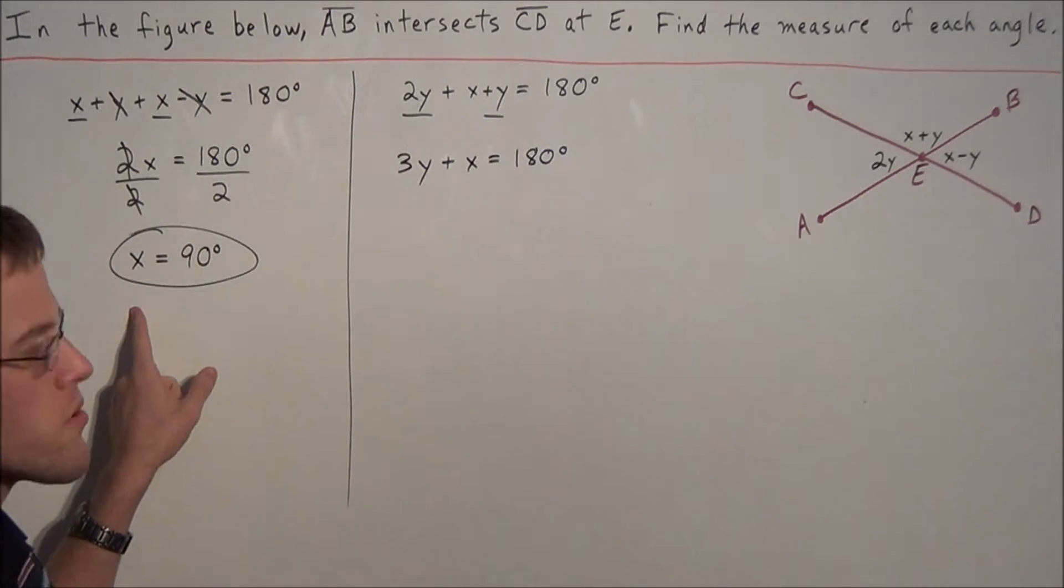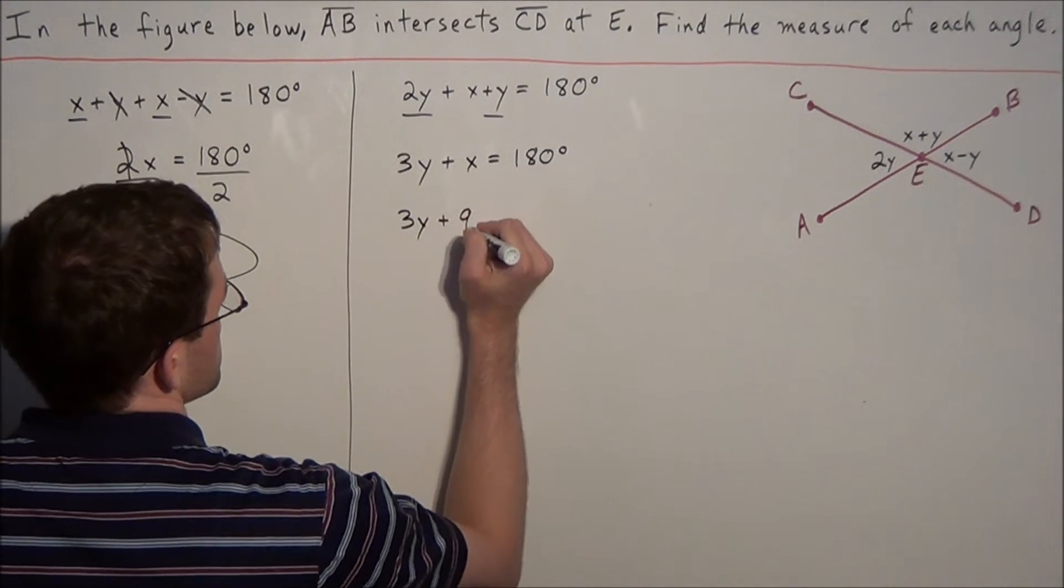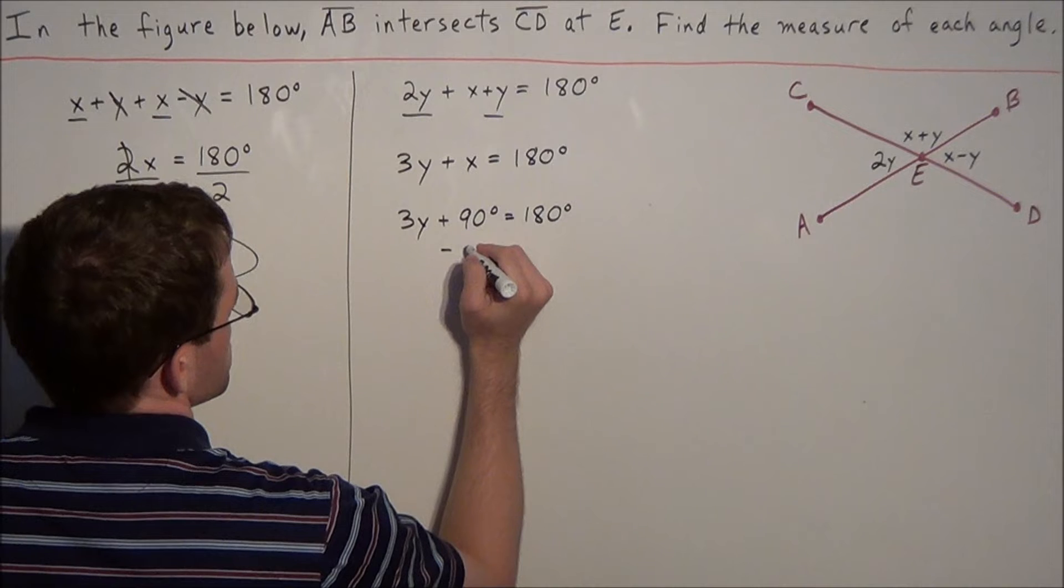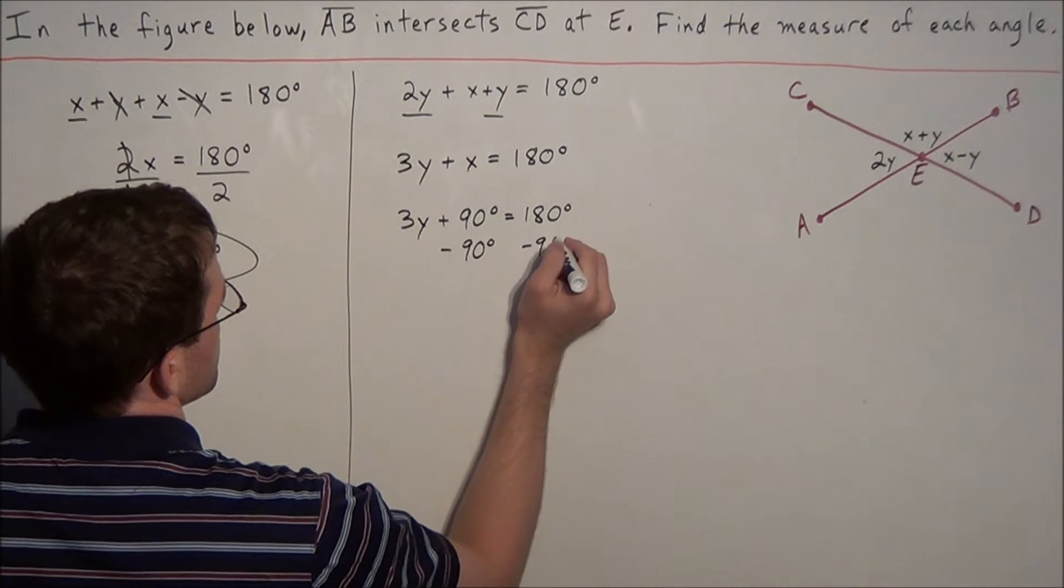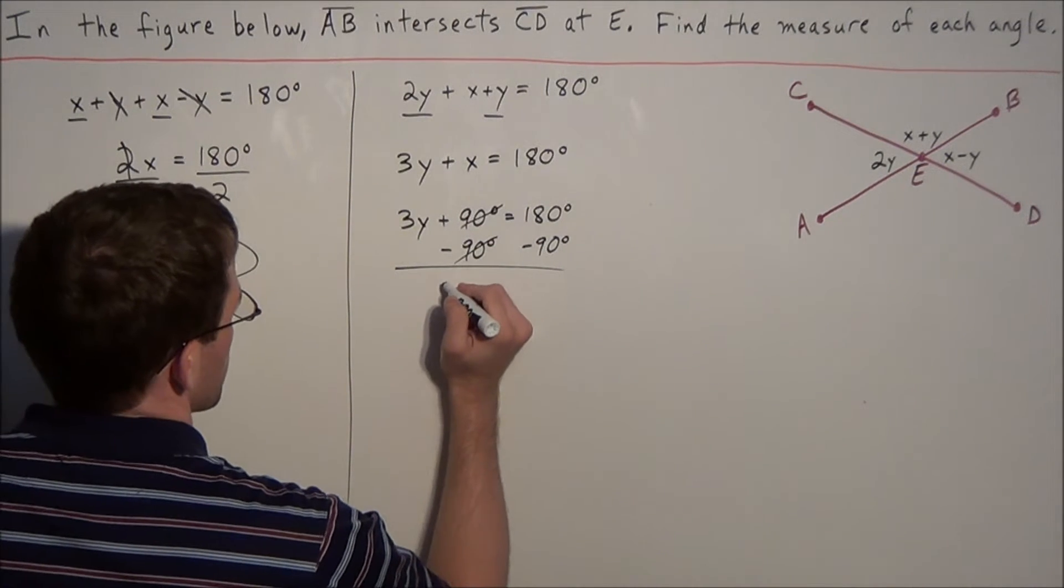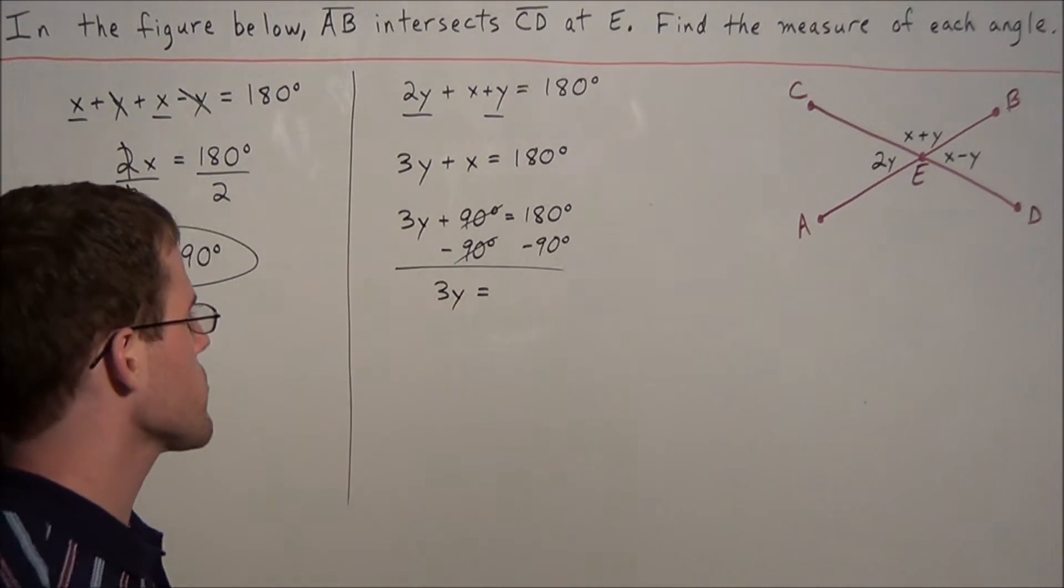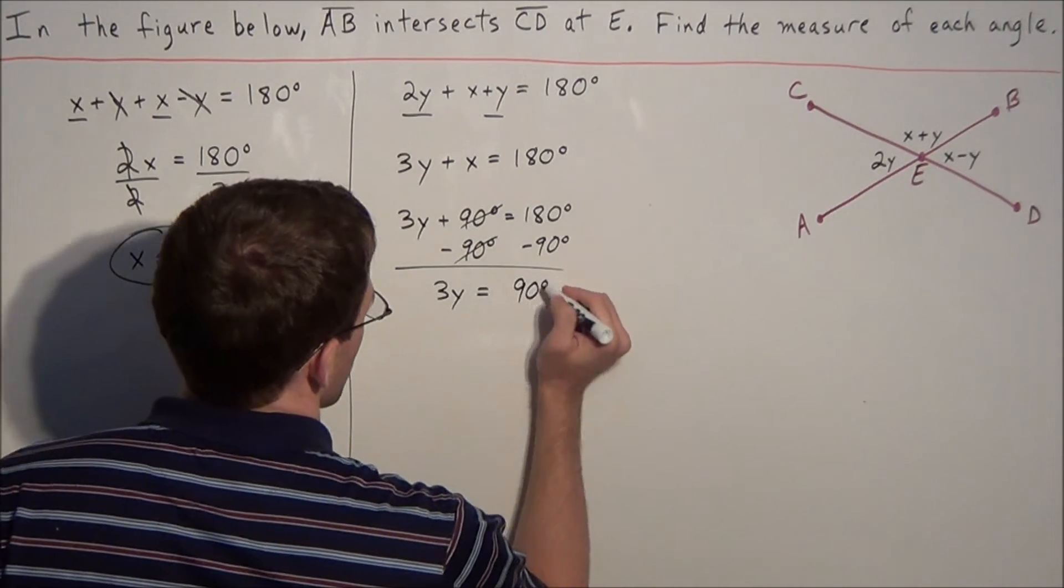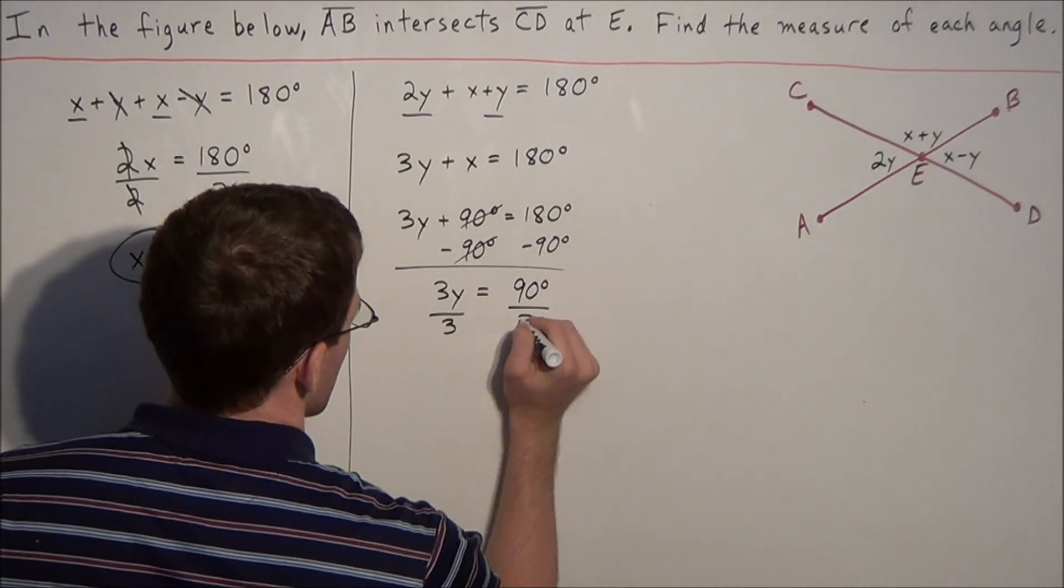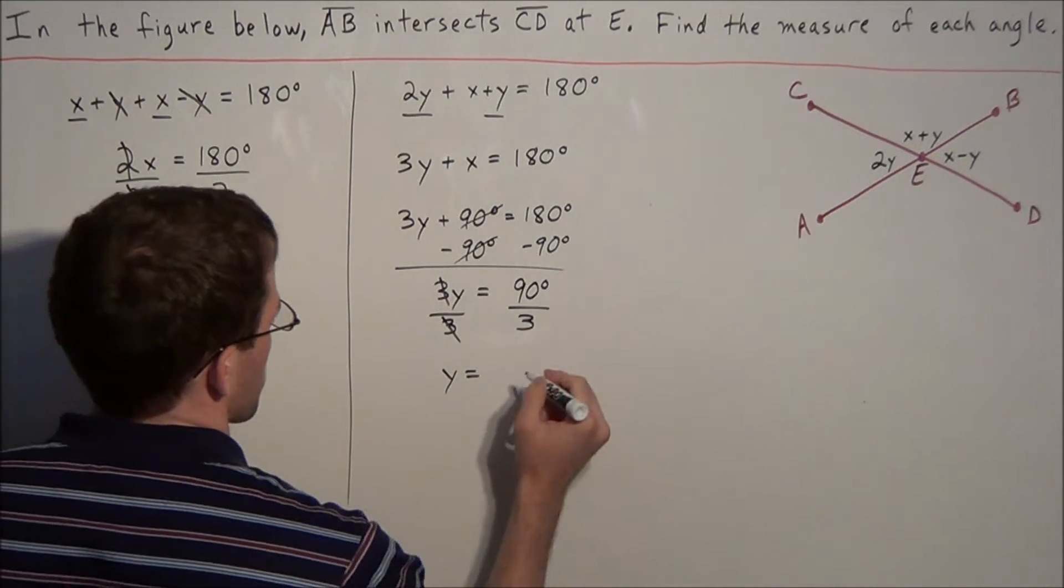Notice how we just found that X equals 90 degrees, so we're going to make a substitution here. We have 3Y plus 90 degrees equals 180 degrees. To solve for Y, we subtract 90 degrees from both sides. On the left side we have 3Y equals 180 degrees minus 90 degrees, which is 90 degrees. So we divide both sides by 3, and Y equals 30 degrees.